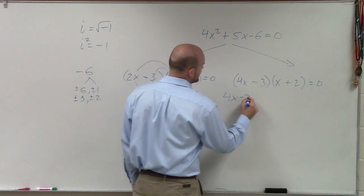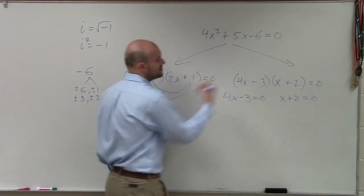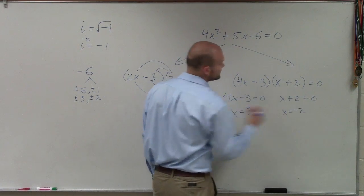So therefore, now I have 4x minus 3 equals 0 and x plus 2 equals 0. Now, by using my inverse operations, I can say x equals 3 fourths and x equals negative 2.